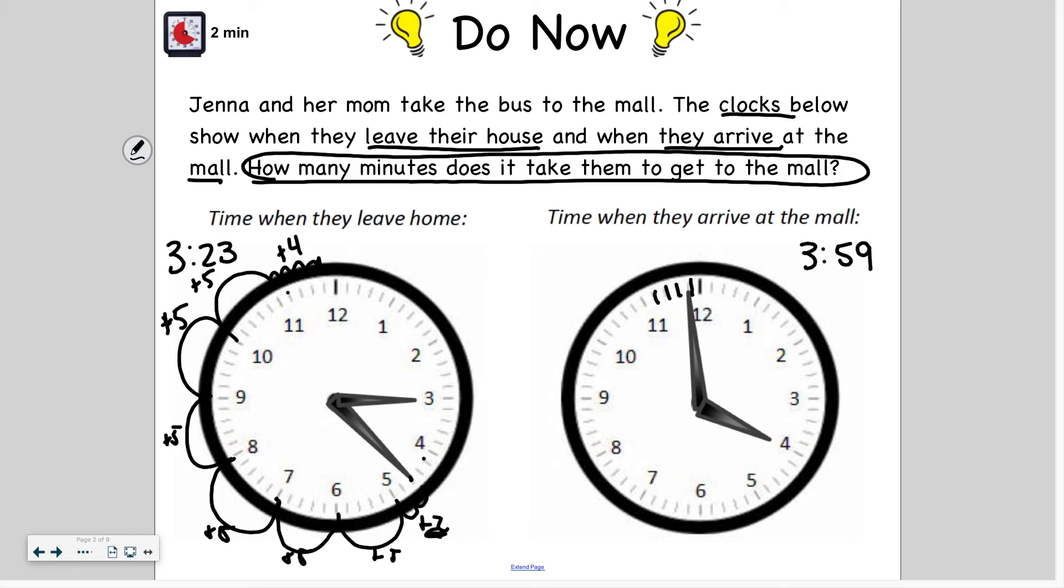So if I add these minutes up together, so I have 5, 10, 15, 20, 25, 30, 34 plus two more would be 36. So 36 minutes. It takes them 36 minutes to get to the mall. I hope that's what you had. And if you use a number line, you should still get the same answer. If you have any questions about how I use the clock to figure this out instead of a number line, you can always message me.